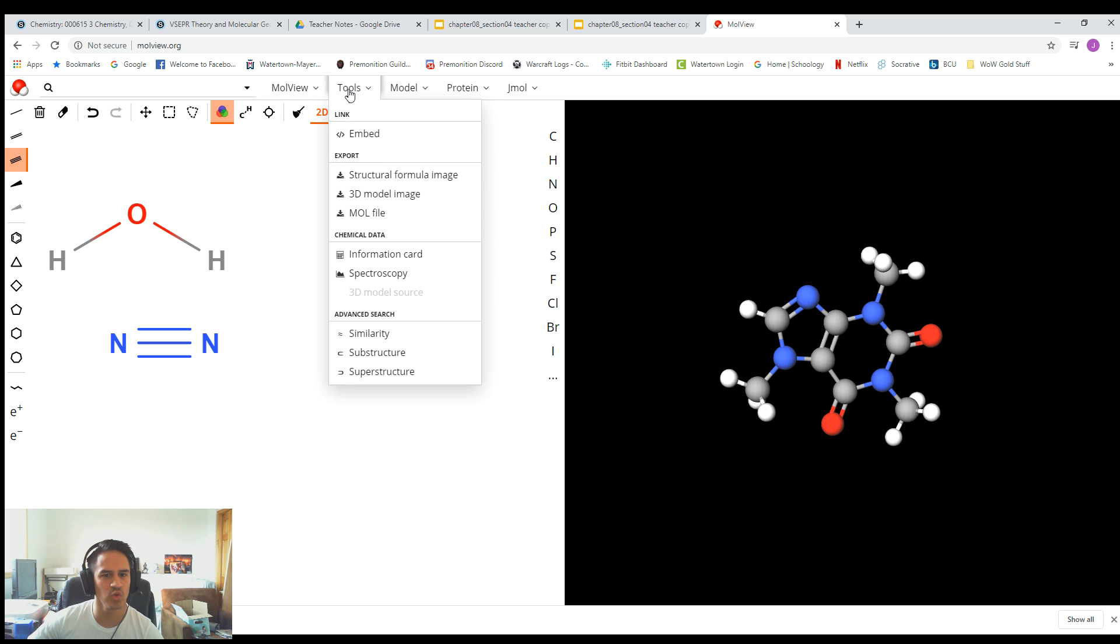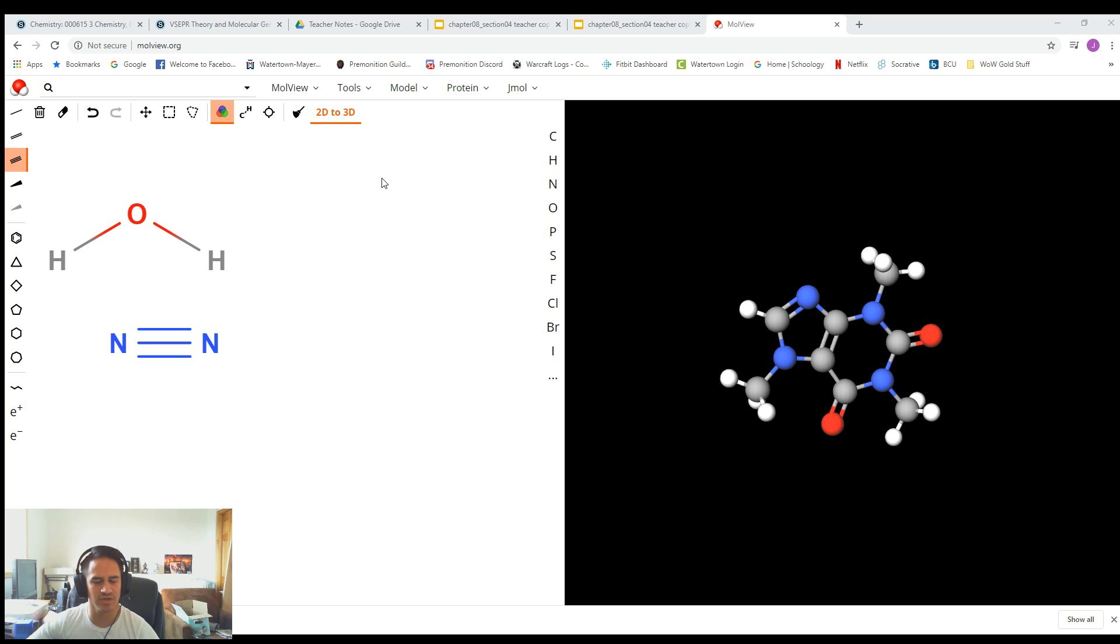Up at the very top, there's this tools button. If you click on it, it'll have this option to export structural formula image. So if you click on this, now it's not going to show it on this video here because the way I have my camera set up, it won't pop up. But if you click on the export structural image, it's going to pull up a save as window on your computer. It'll ask you where you want to save this image.